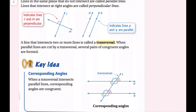Lines in the same plane that do not intersect are called parallel lines — parallel lines are never going to intersect. Lines that intersect at right angles are called perpendicular lines. Right here we have two lines that are perpendicular because they create right angles, and if this is a right angle, then all of these are right angles as well. The little dashes on the lines tell us that they are parallel.